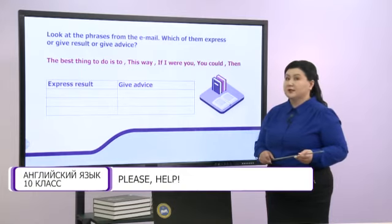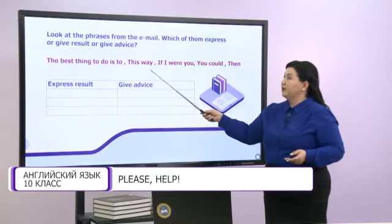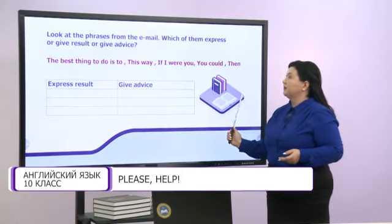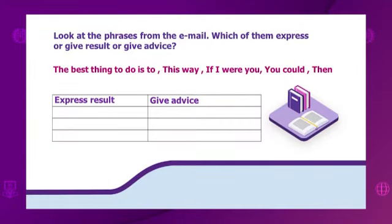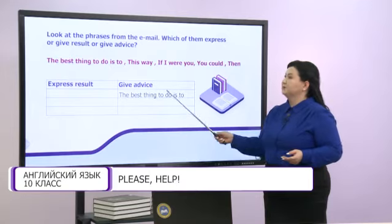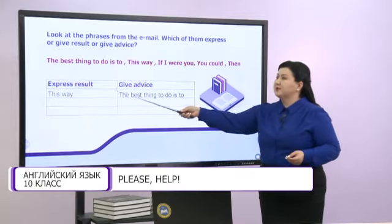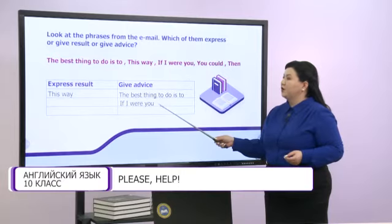Dan has used some phrases in his email. Let's have a look at them: 'The best thing to do is to,' 'This way,' 'If I were you,' 'You could,' and 'Then.' Which of them express a result or give advice? 'The best thing to do is to' is used to give advice. 'This way' is used to express the result. 'If I were you' and 'You could' also give advice.